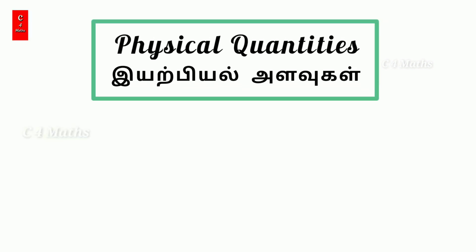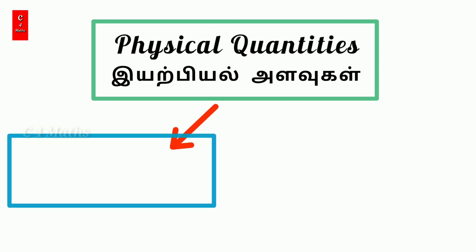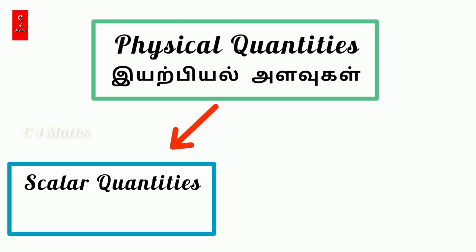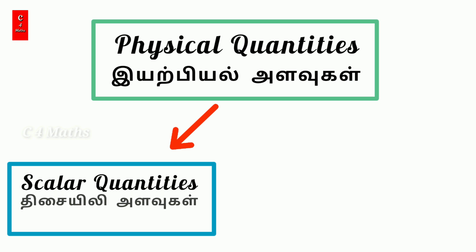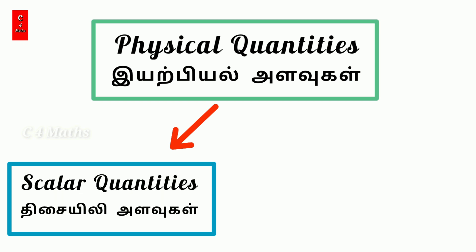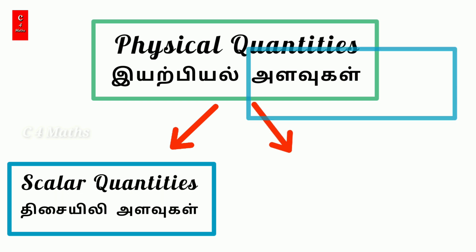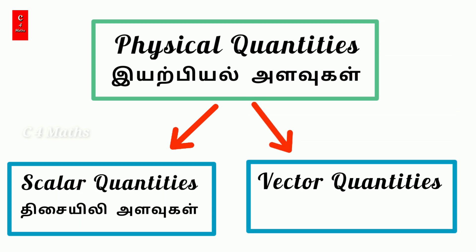Physical quantities in algebra are of two types. The first type is scalar quantities, and the second type is vector quantities. This forms the basis of vector algebra. We will now look at scalars and vectors.